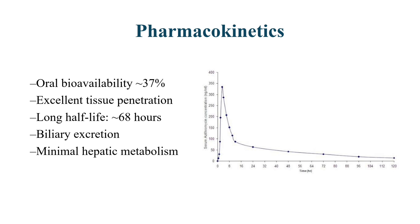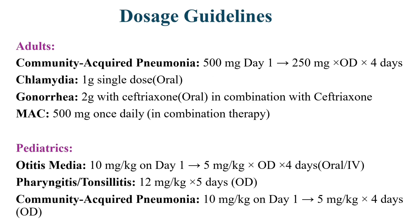Dosage. In adults, for community-acquired pneumonia, we start with 500 mg on the first day, followed by 250 mg daily for the next four days. For chlamydia, a single 1-gram dose is effective. Gonorrhea requires a 2-gram dose, often combined with ceftriaxone. For MAC infections, 500 mg daily is used in combination therapy.